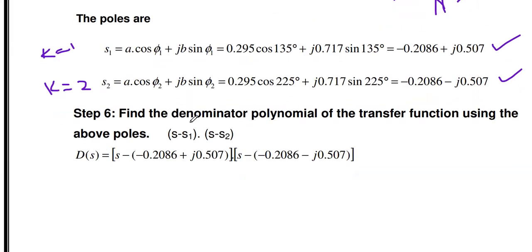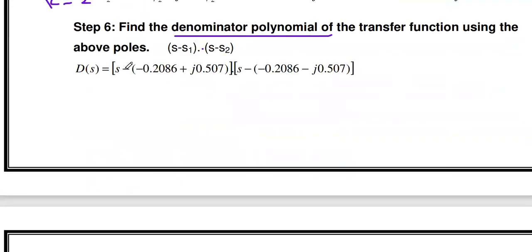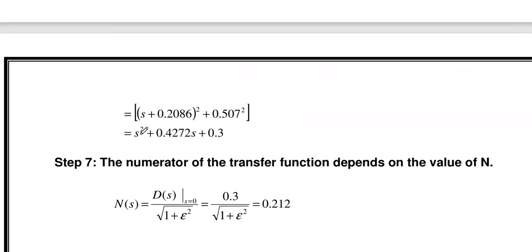After calculating the poles, the next step is to find the denominator polynomial. The denominator polynomial is the product (s − s₁)(s − s₂). Substituting and expanding — multiplying each term — we get the denominator polynomial D(s) = s² + 0.4272s + 0.3.